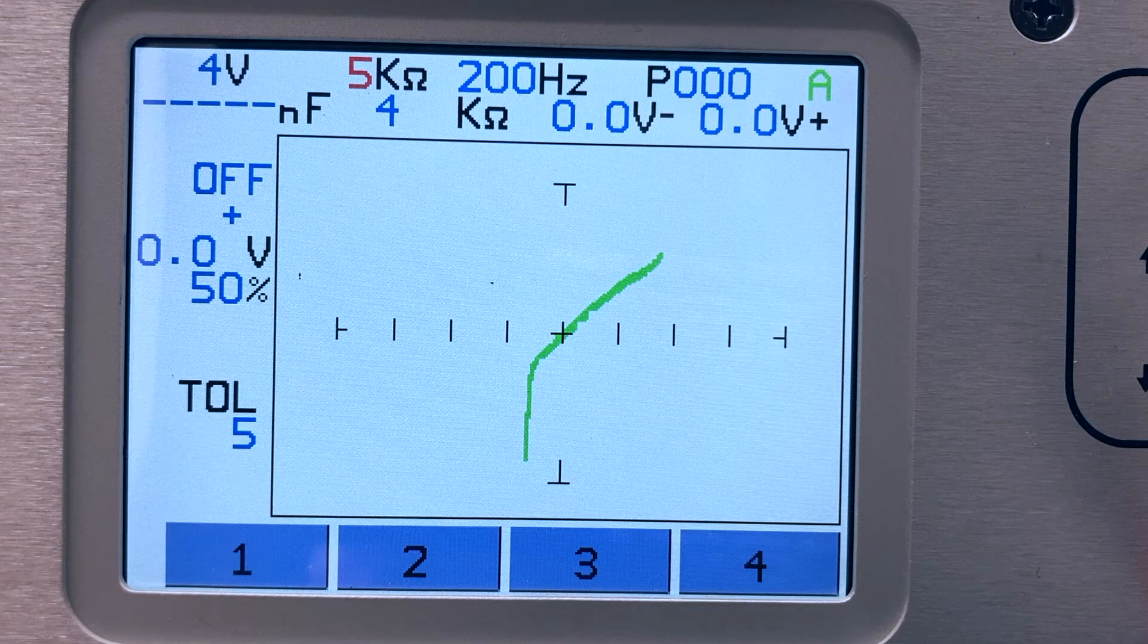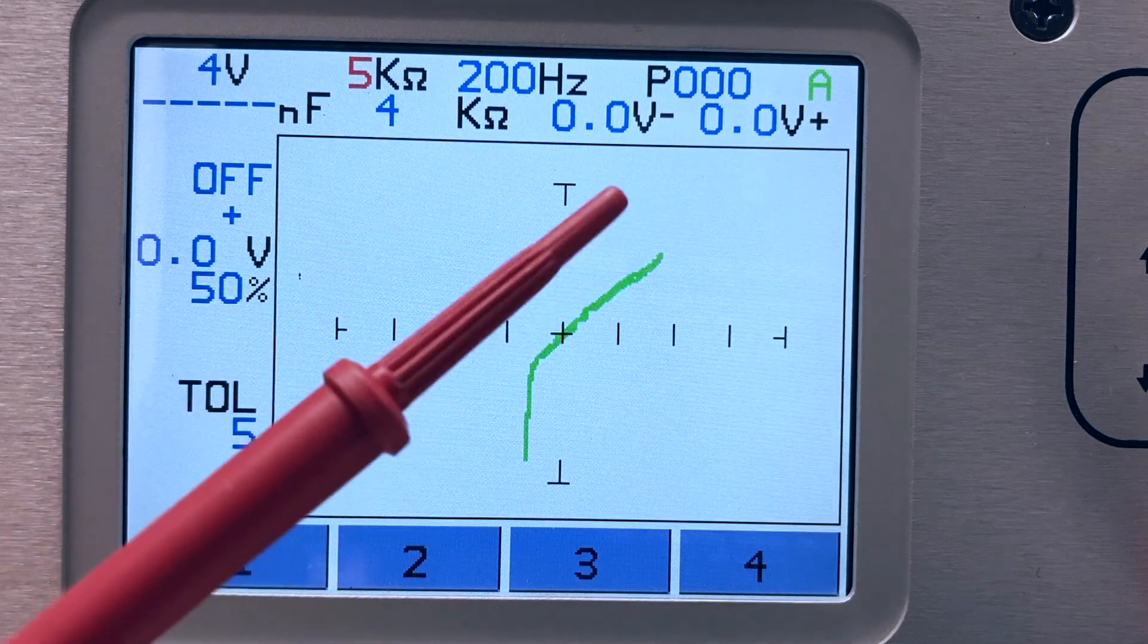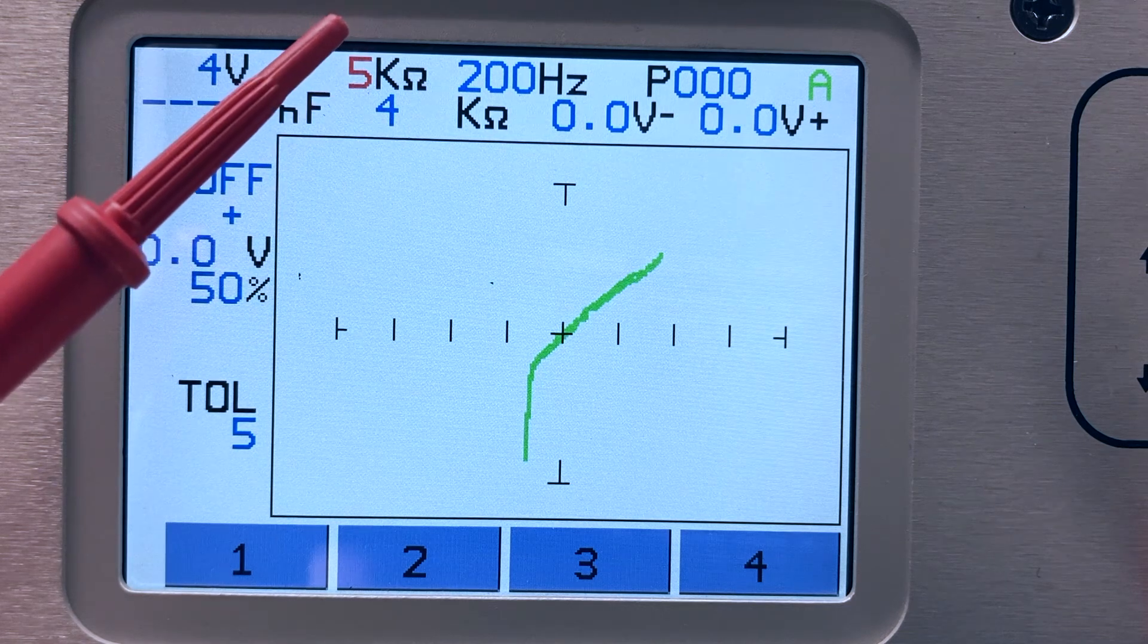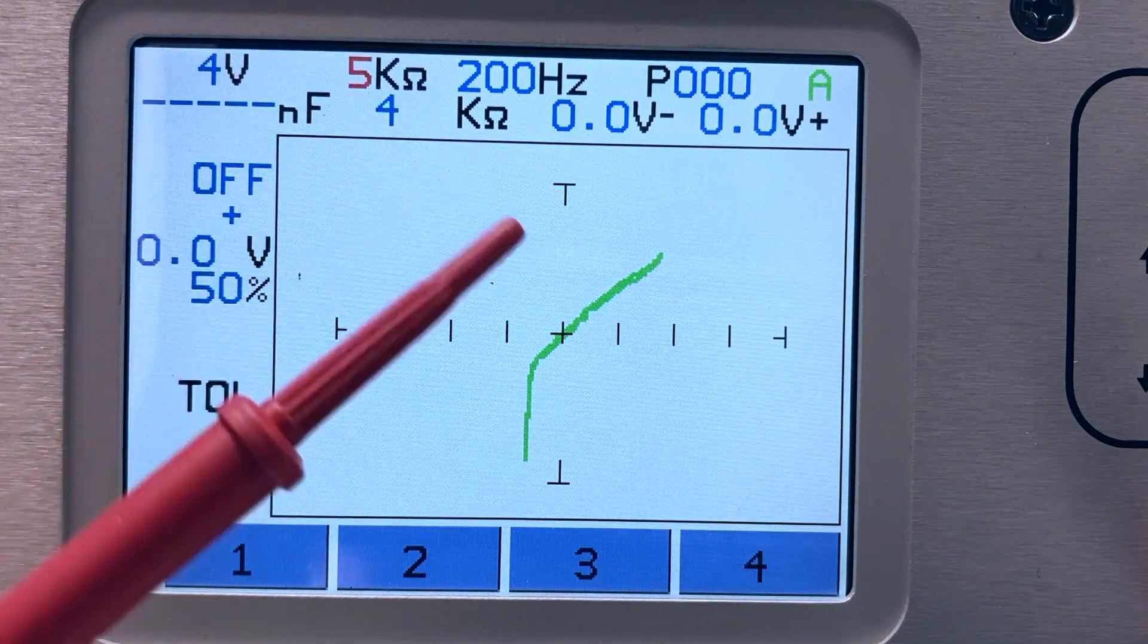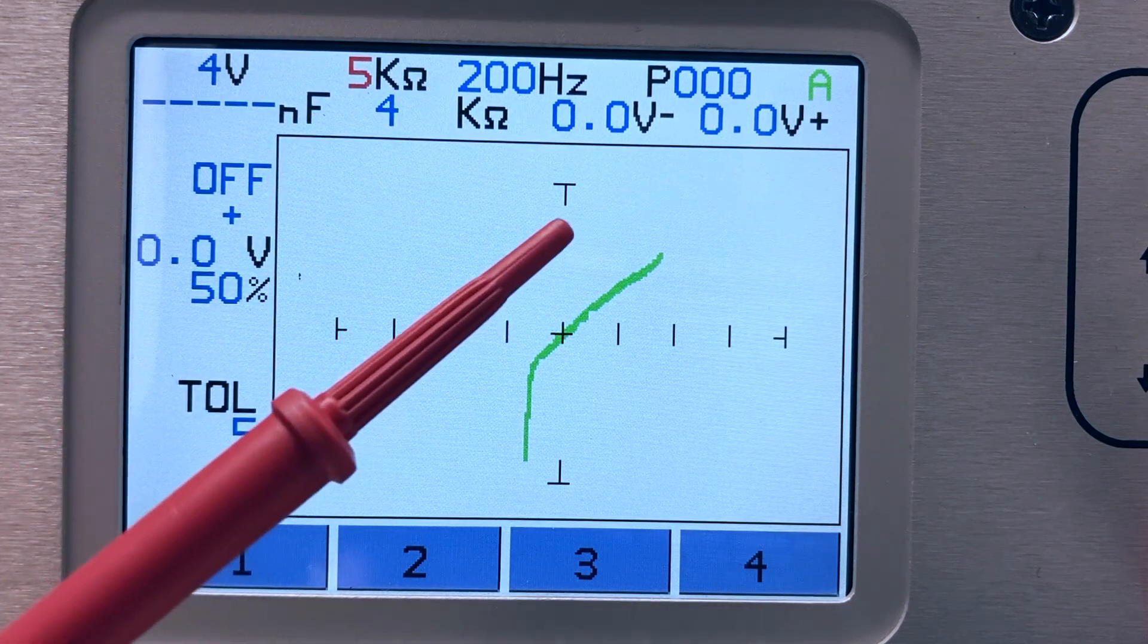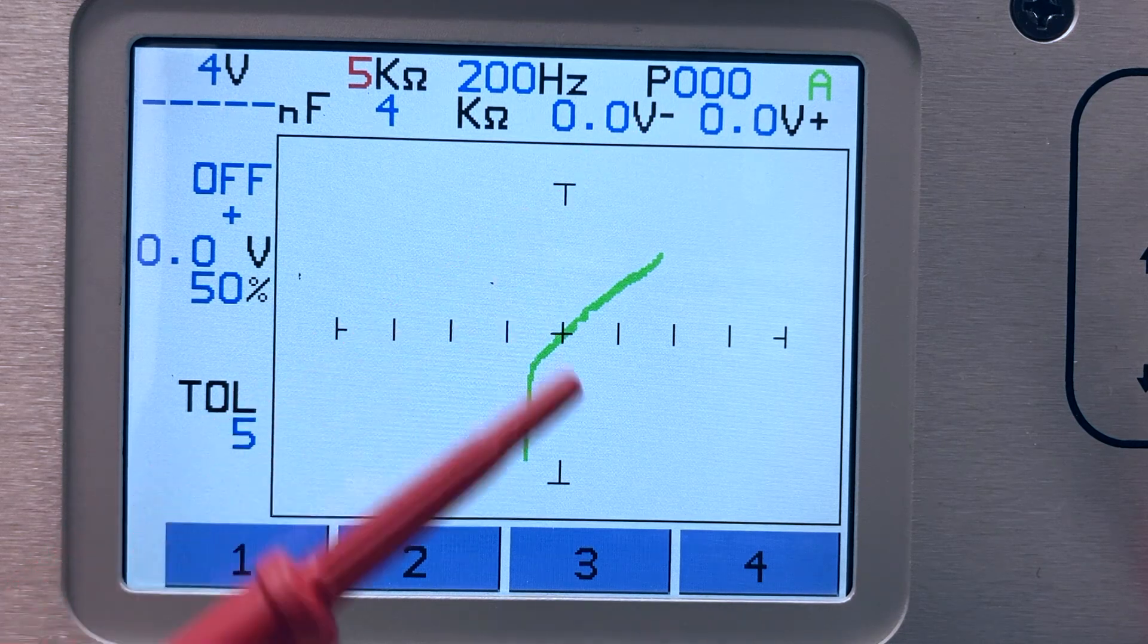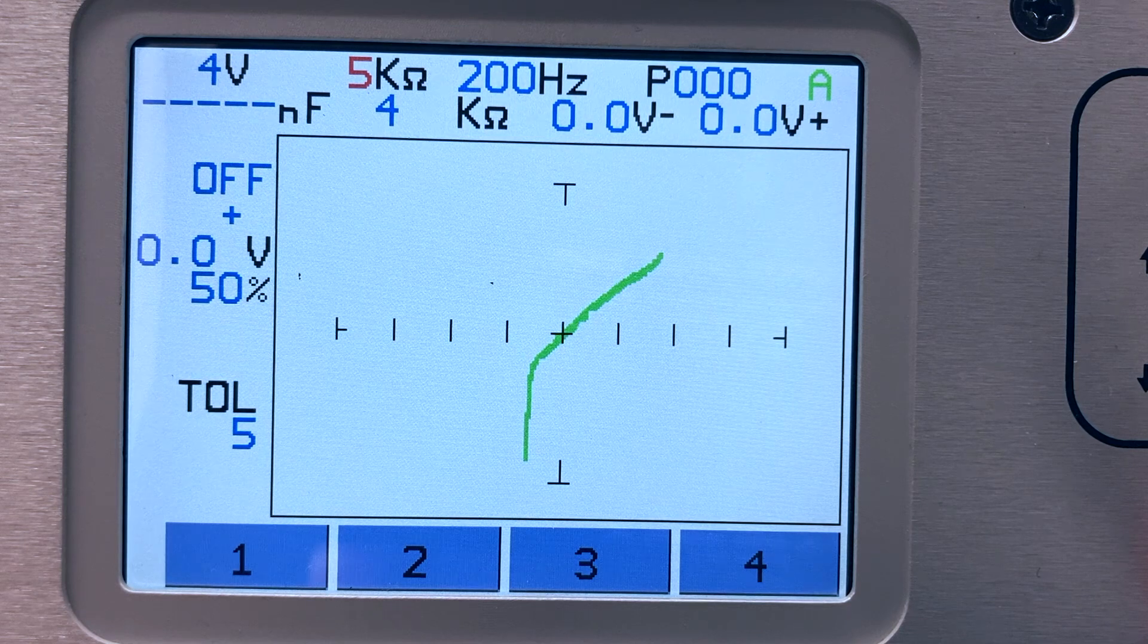The resistive leakage on this integrated circuit component is clearly evident with the tracker range set higher at 5k ohms. Note the horizontal portion of the signature is at an angle indicating resistance. This failure is a good reason to always include a higher resistance tracker range when testing semiconductors.